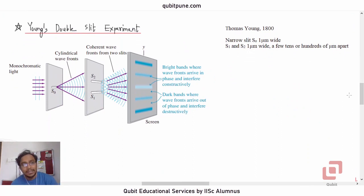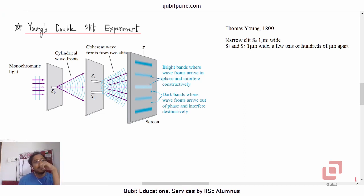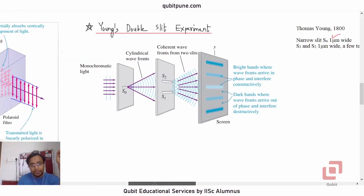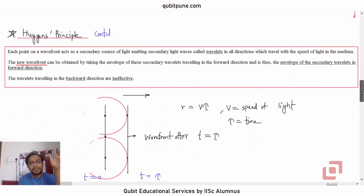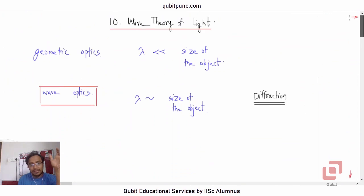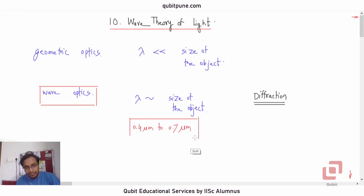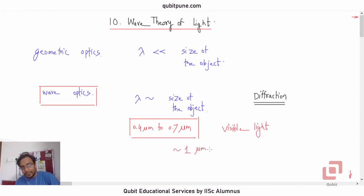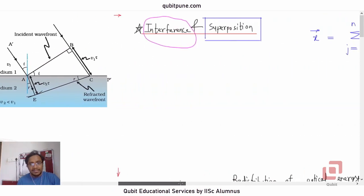The most famous experiment for interference of light waves is Young's double slit experiment. The setup uses a monochromatic source passed through a very thin slit of around one micrometer — comparable to the range of visible light wavelengths, which is 0.4 to 0.7 micrometers. Because the wavelengths are comparable to the slit width, you can see the wave effect and interference.